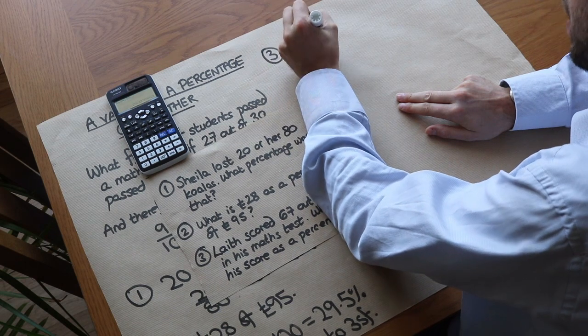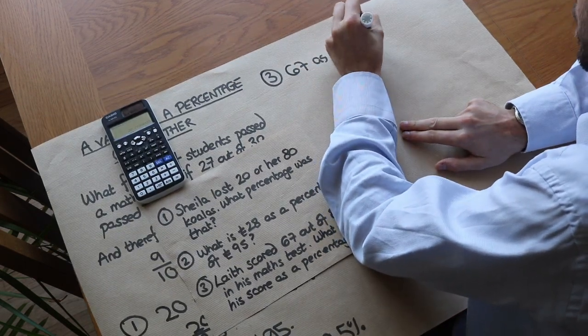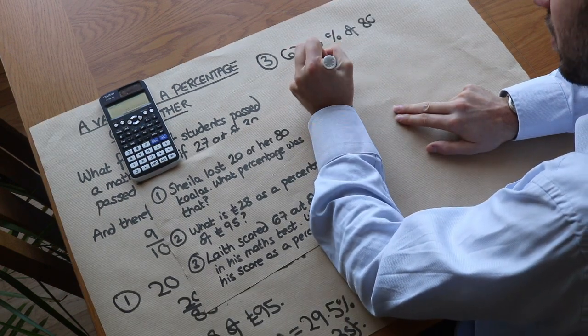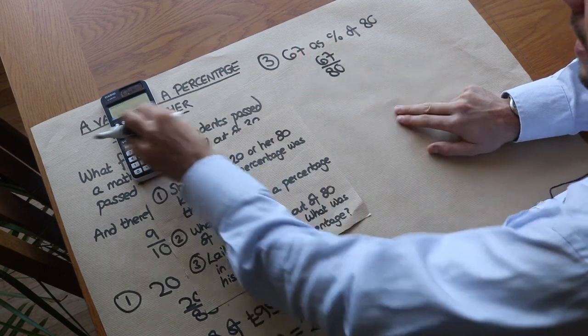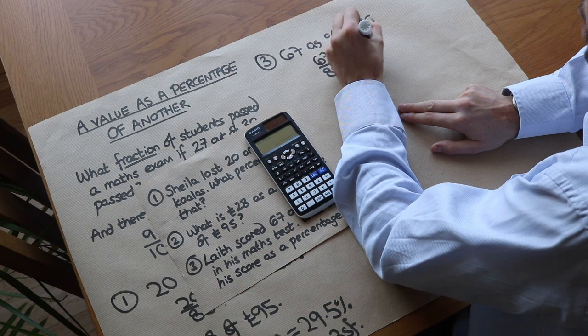So it's 67 as a percentage of 80. So what we do is we find out, well, what fraction of the test did he get right? Well, it was 67 80ths of the test, and then we convert that to a percentage by multiplying by 100.